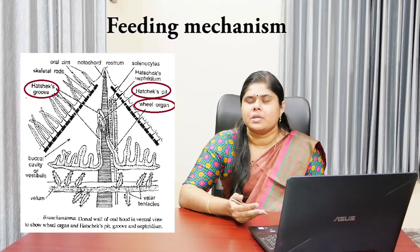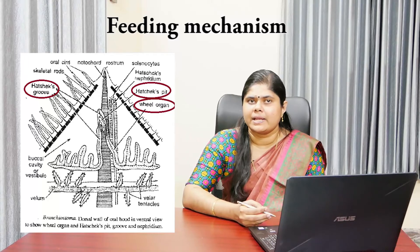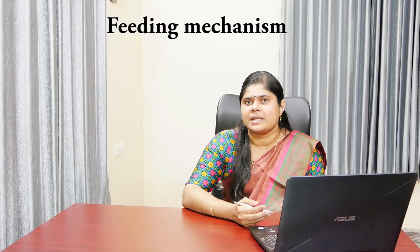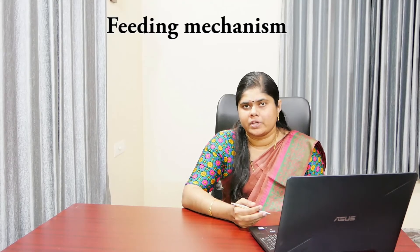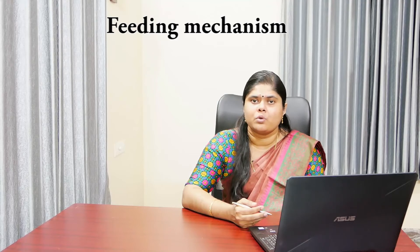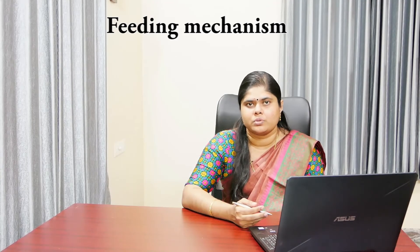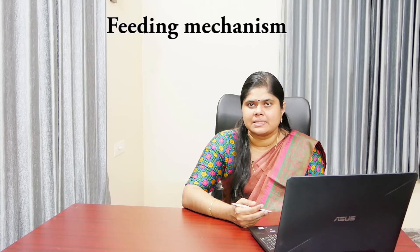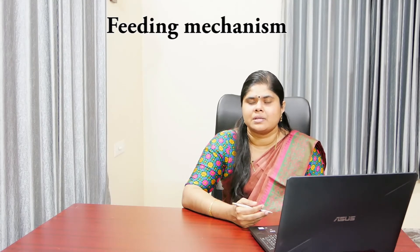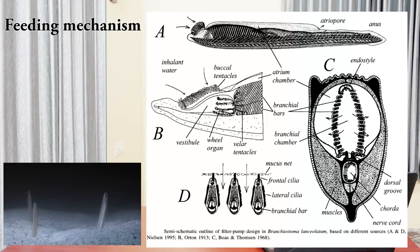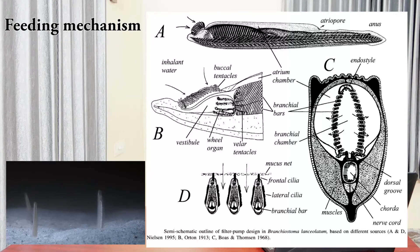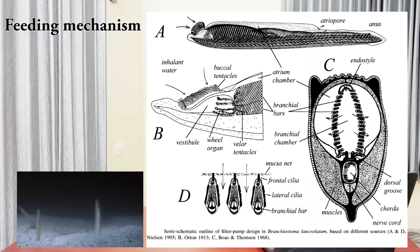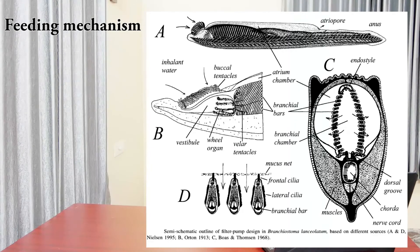The flow of water into the pharynx is controlled by the velum. Periodically, the atriopore closes and the transverse muscles of the atrial floor undergo sudden contraction. This sets up a reversal of water current, or rejection current, ejecting water out forcefully through the endostome and mouth. As a result, the velum tentacles and buccal cirrhae are able to shed off larger food and sand particles accumulated on them. The pharynx plays the most important part in food collection. The outward beating of lateral cilia of gill bars and atrial cilia on their outer surface drive the water current through the gill slits into the atrium, finally passing through the atriopore.